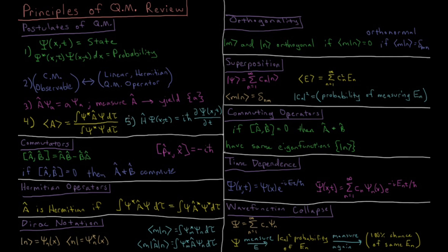The fifth and final postulate is that the system evolves in time according to the time-dependent Schrödinger equation. This differs from the time-independent Schrödinger equation H-psi equals E-psi in that it has explicit time dependence: the Hamiltonian acting on the time-dependent wave function equals the square root of minus one times h-bar times the partial derivative with respect to time of the time-dependent wave function.